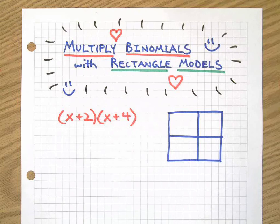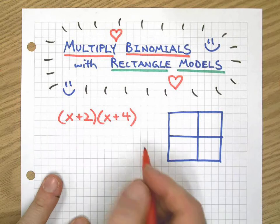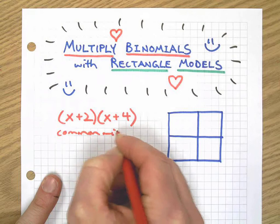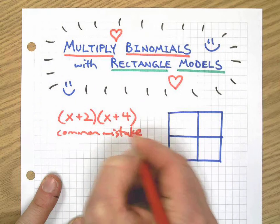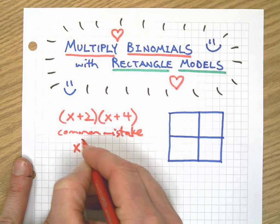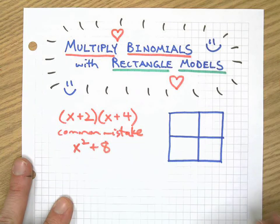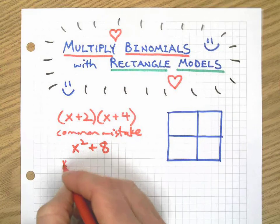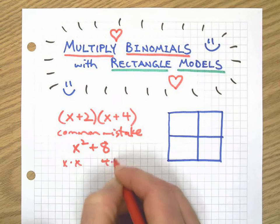Here's a problem we've done before and let me show you a common mistake. This is a way for you to check yourself and see if you need to keep watching. The common mistake would be to call this x squared plus 8, right, because you're going to do x times x and 4 times 2.